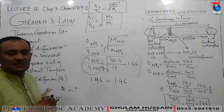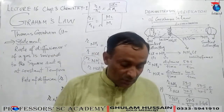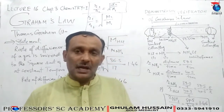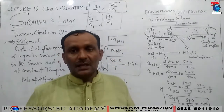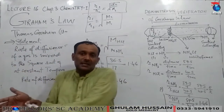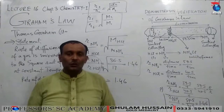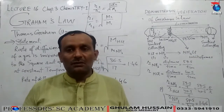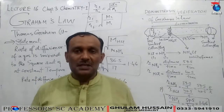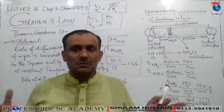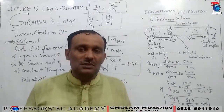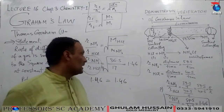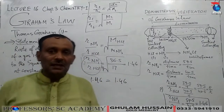This confirms that Graham's thinking about diffusion was correct: the movement of gas molecules from one place to another is inversely proportional to the square root of their densities or molecular masses, if temperature and pressure are kept constant. The heavier gas diffuses less; the lighter gas reaches from one place to another more quickly.